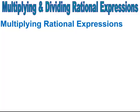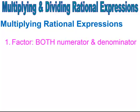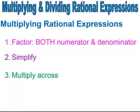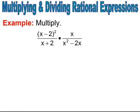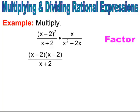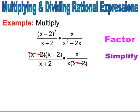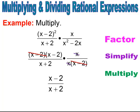When multiplying rational expressions — similar to fractions — factor both the numerator and denominator first, then simplify and multiply across with whatever is left. I'm multiplying two rational expressions together. In the top, I have x minus 2 squared, which I rewrite as x minus 2 times x minus 2. In the second rational expression, I factor out the GCF from the denominator — the GCF is x — giving x times x minus 2. Now I simplify: one of the x minus 2's cancels, and the x's cancel, leaving x minus 2 all over x plus 2.